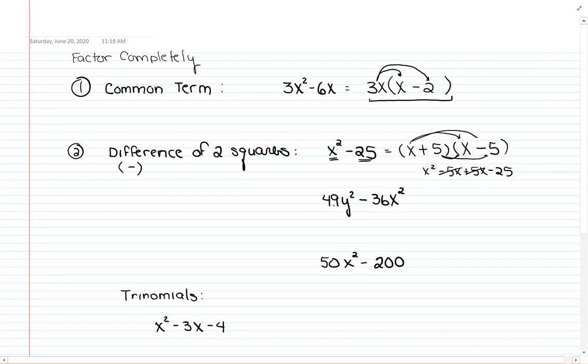For the next one, again, we're looking to see is there a common term that could be factored out or a number that will divide both into 49 and 36. In this case, no. It is the difference. And I notice that I can take the square root of 49 and 36 and the y² and the x². So this is the difference of two squares.